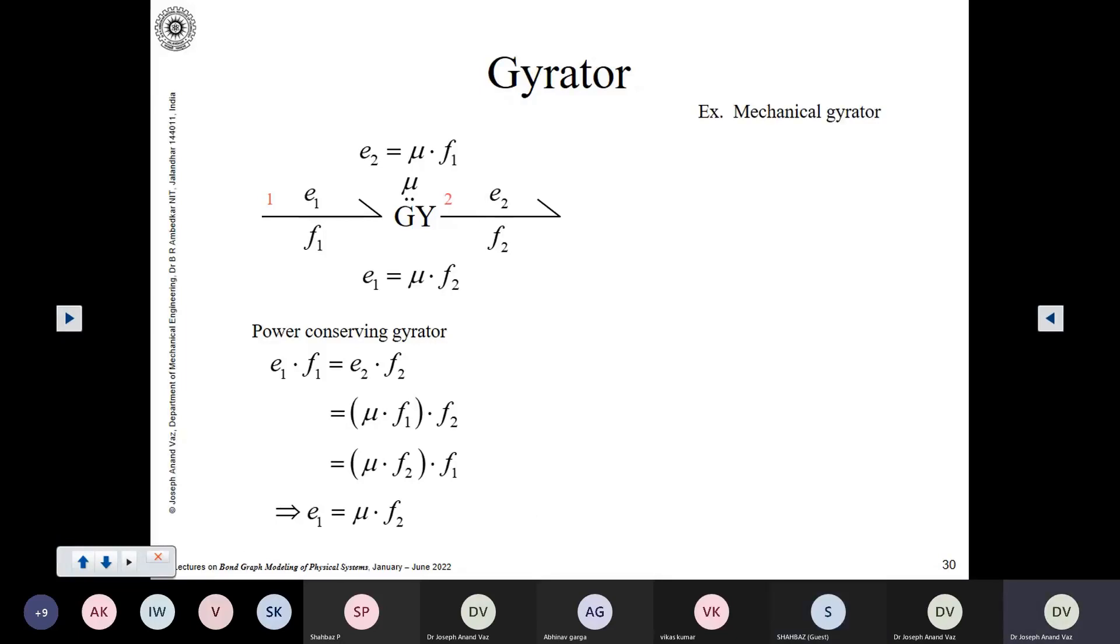This is an example of a mechanical gyrator. You have a gyroscope. You have a disc spinning at very high angular velocity. And if you apply a force F1, you experience on the output side a velocity F2, which is given by V2 here, which is perpendicular to the force which you are applying. Likewise, when you apply a force F2, you get a velocity V1. Or if you apply a velocity V2, you will get a force F1, which is perpendicular to it. So, this is the nature of the gyroscopic element.